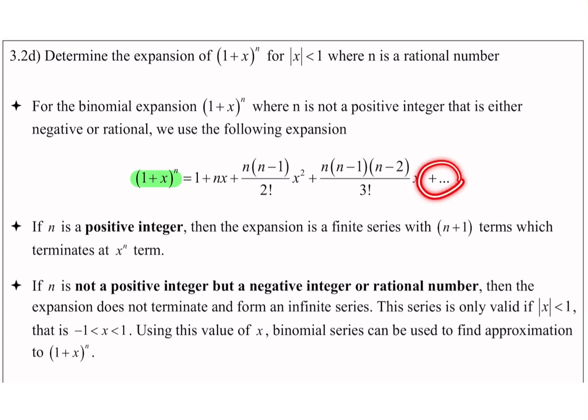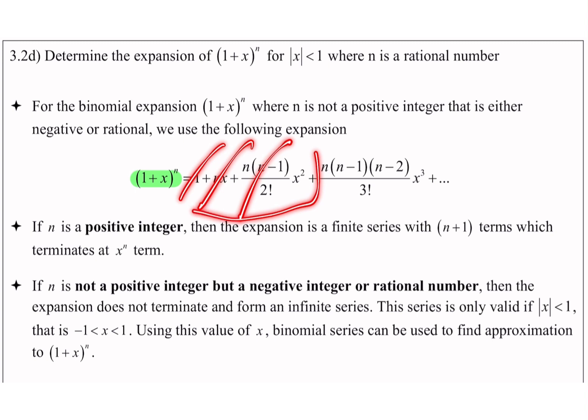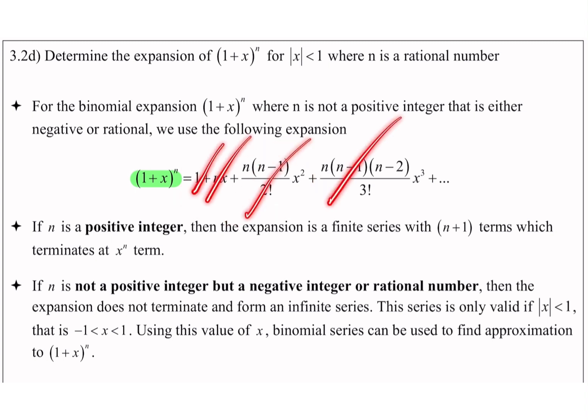Sebab tu kita ada plus triple dot. So, means that kita hanya expand dia berdasarkan soalan nak. Kalau soalan nak sampai first 3 terms, jadi sampai x kuasa 2 je lah. Kalau dia nak first 4 terms, so sampai x kuasa 3 je lah. Kalau dia nak up to x kuasa 4, then awak expand sampai x kuasa 4.